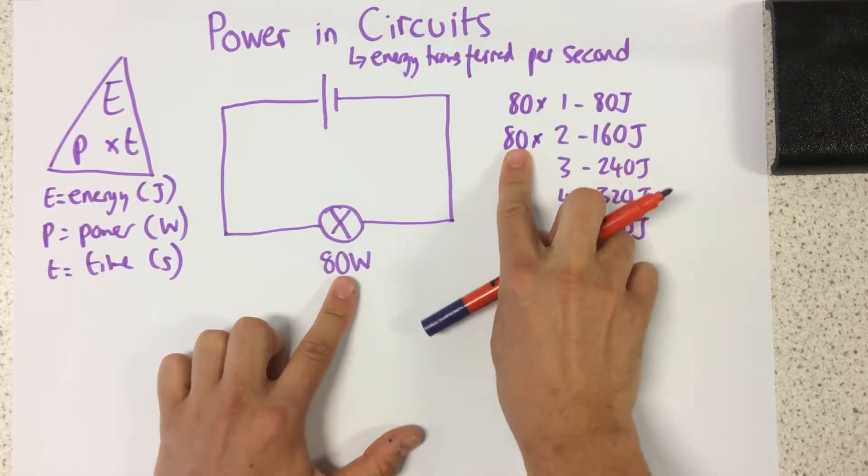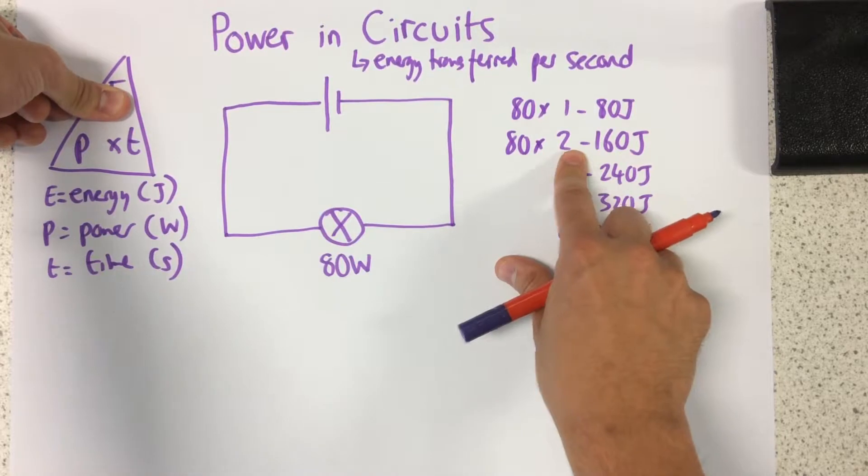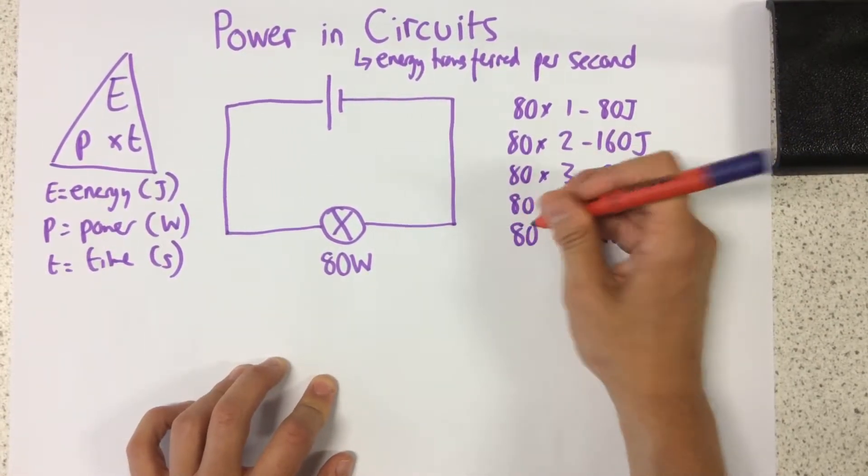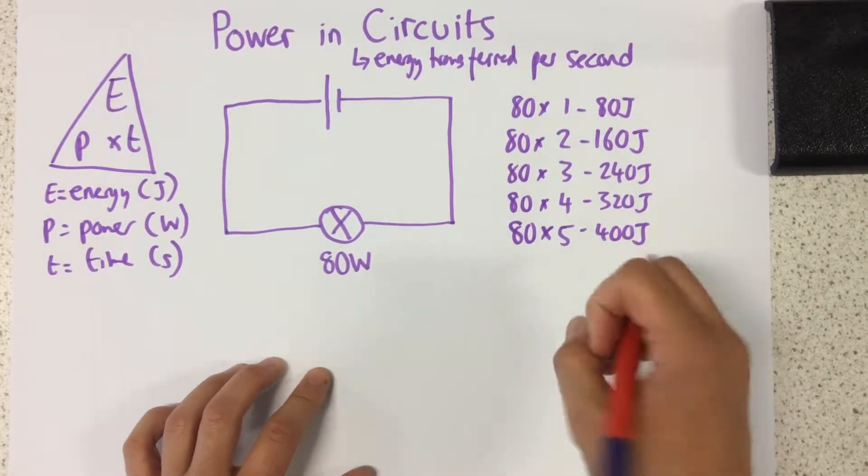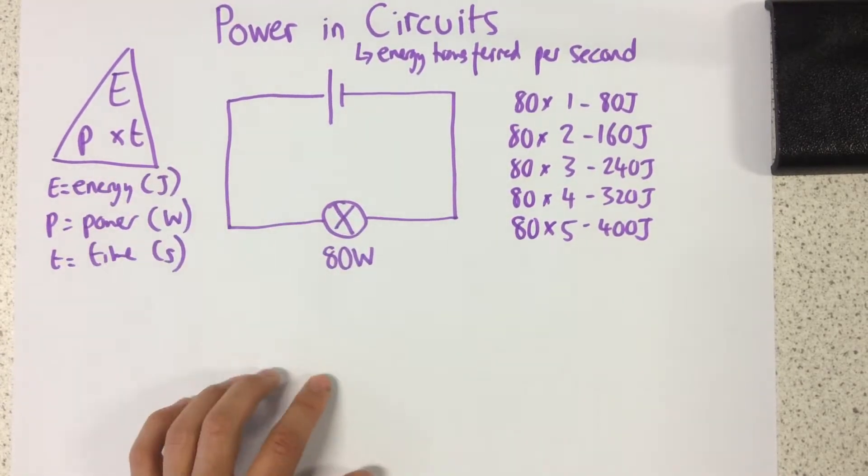In two seconds, power times time, we would have done 80 times two, which is 160 and so on. So to find out the amount of energy produced or energy transferred by a component, we just need to do the power multiplied by the time.